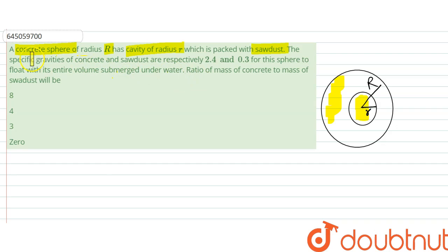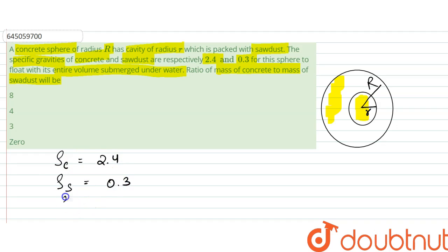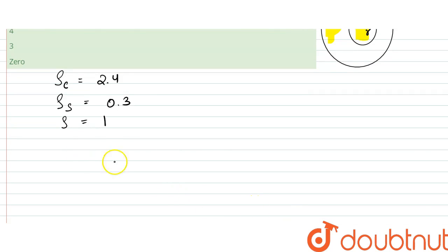The specific gravities are given for concrete and sawdust to be 2.4 and 0.3 respectively. The entire volume is submerged underwater. We need to find the ratio of mass of concrete to mass of sawdust. The density of concrete is 2.4, density of sawdust is 0.3, and density of water is 1.